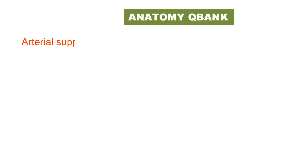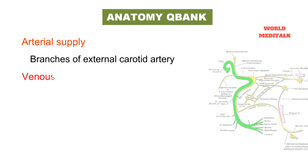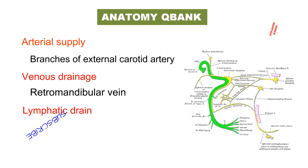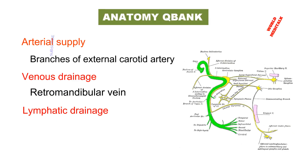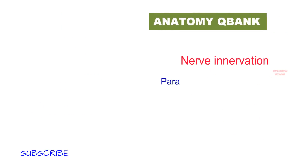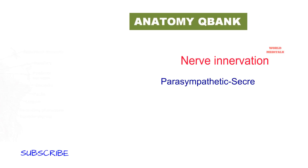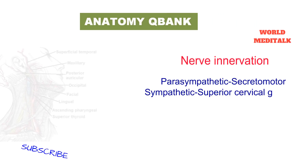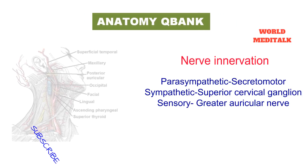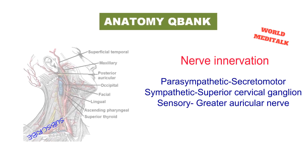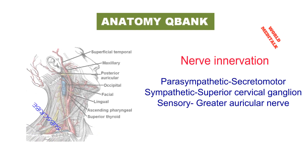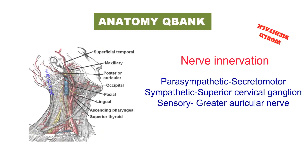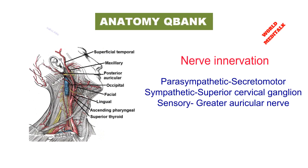The arterial supply comes from branches of the external carotid artery. Venous drainage is via the retromandibular vein, and lymphatic drainage goes to the deep cervical nodes. Nerve innervation includes parasympathetic secretomotor fibers, sympathetic supply from the superior cervical ganglia, and sensory supply via the greater auricular nerve. Parasympathetic stimulation produces water-rich serous saliva, while sympathetic stimulation leads to production of low-volume, enzyme-rich saliva.